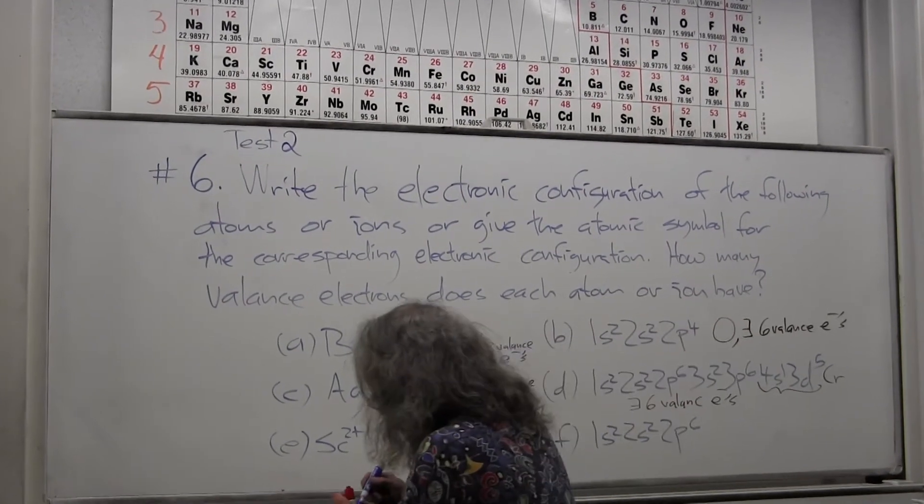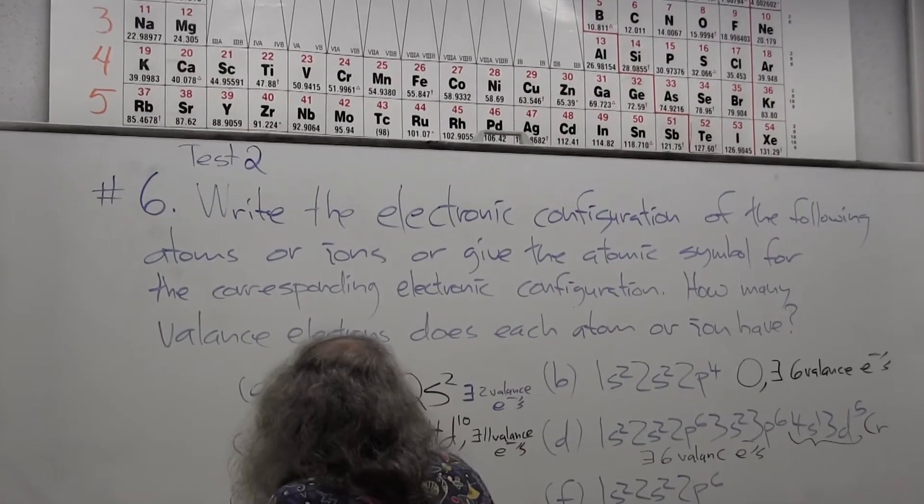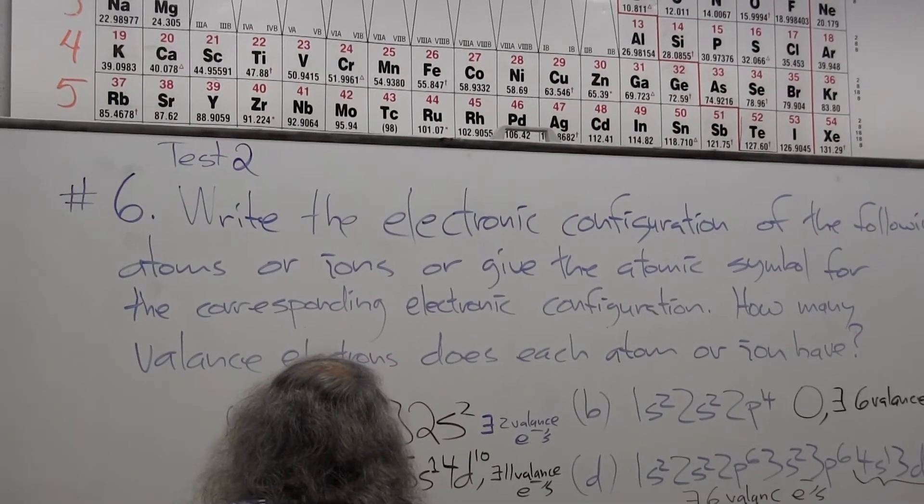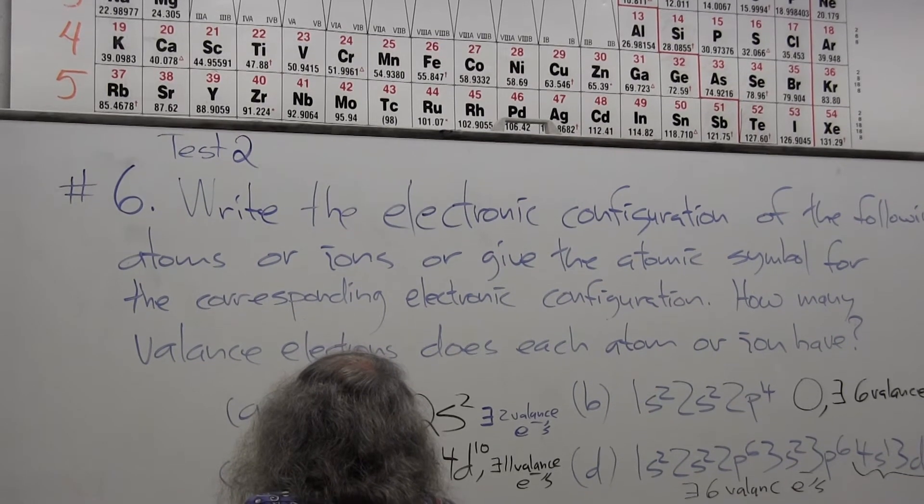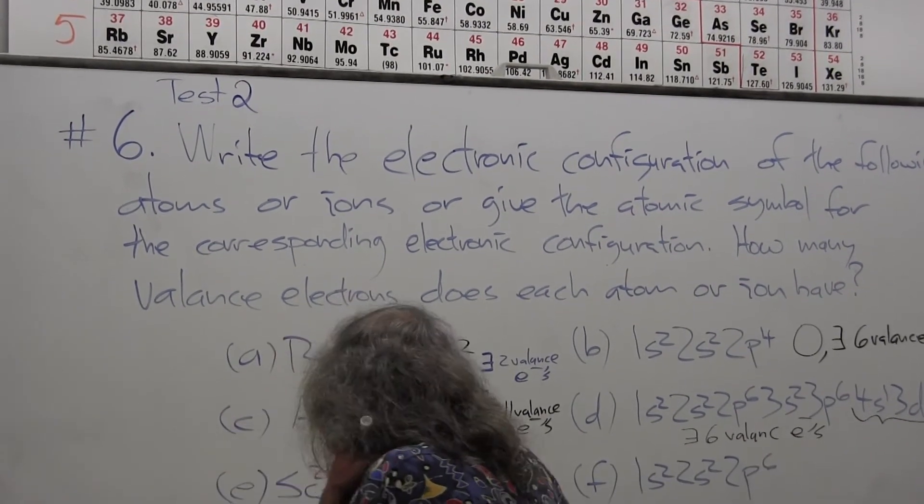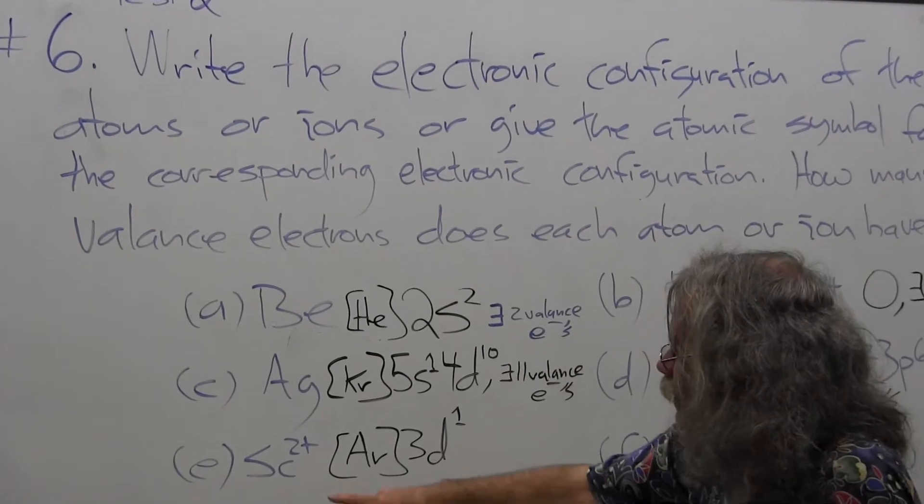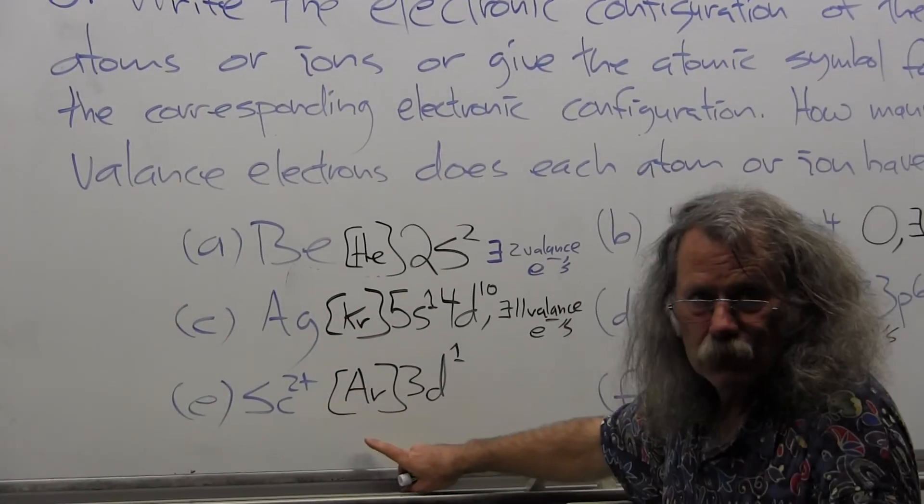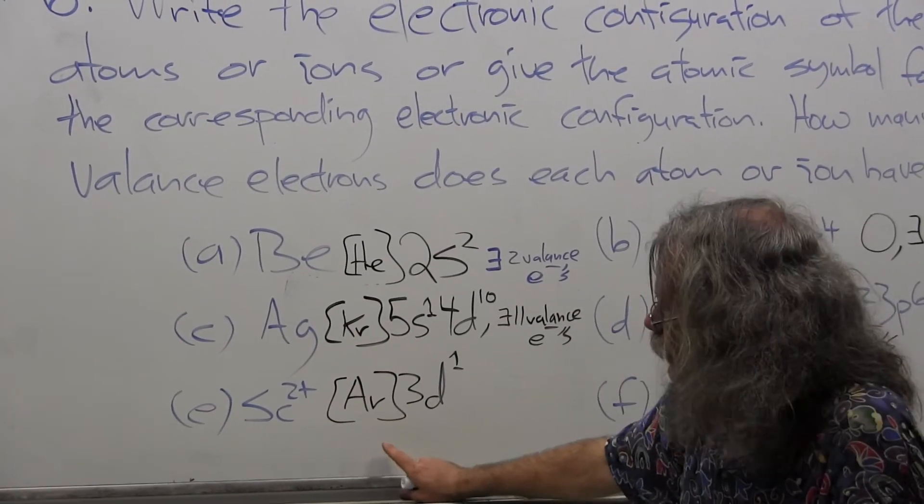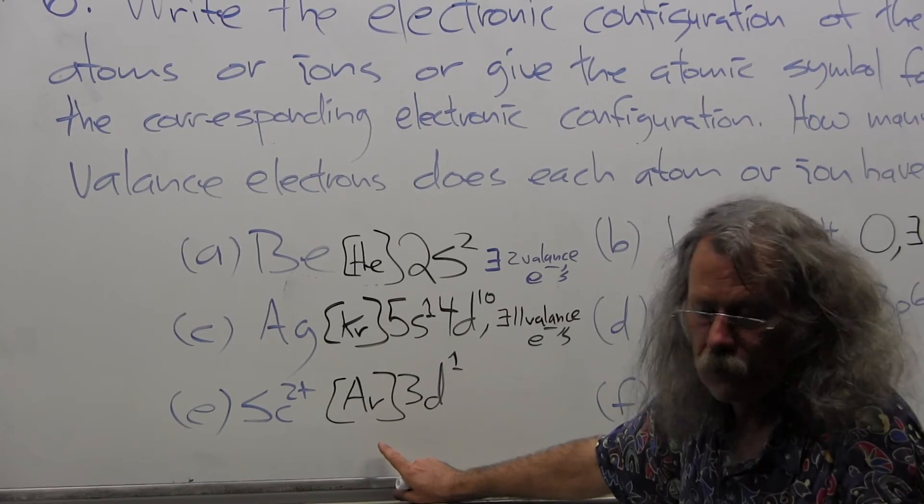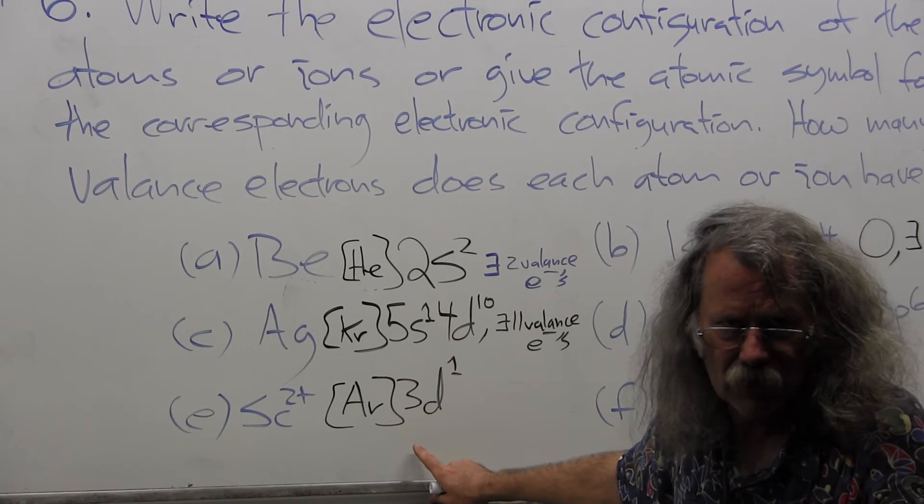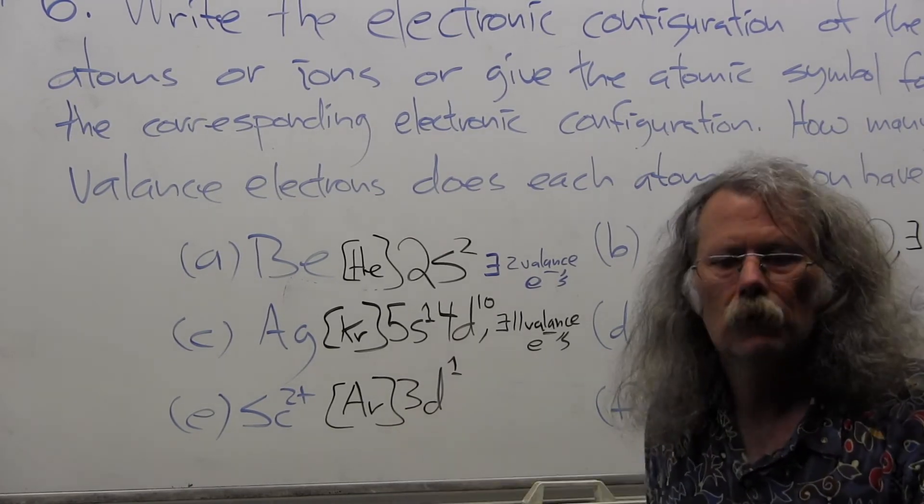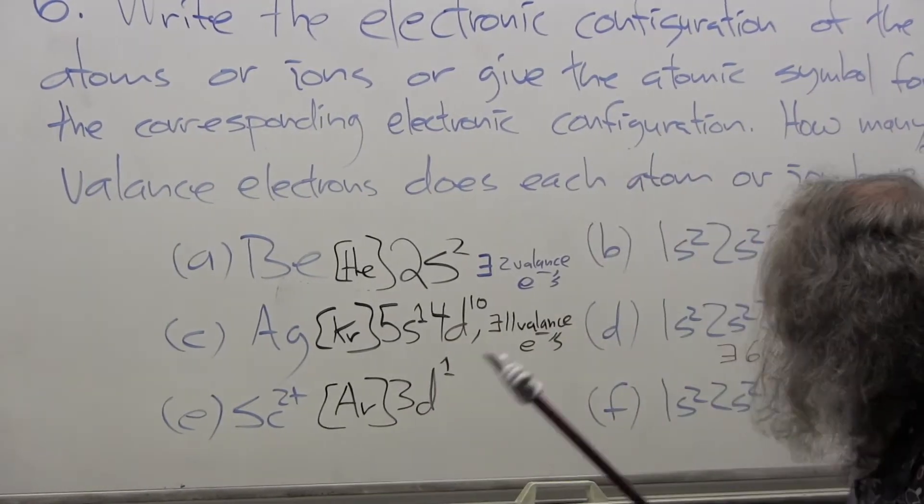So I have a structure that's argon 3d1, not 4s2, because those s electrons are more easily removed than the d electrons in this case. So this is an anomaly we discussed in the lecture. I would expect you to know it.